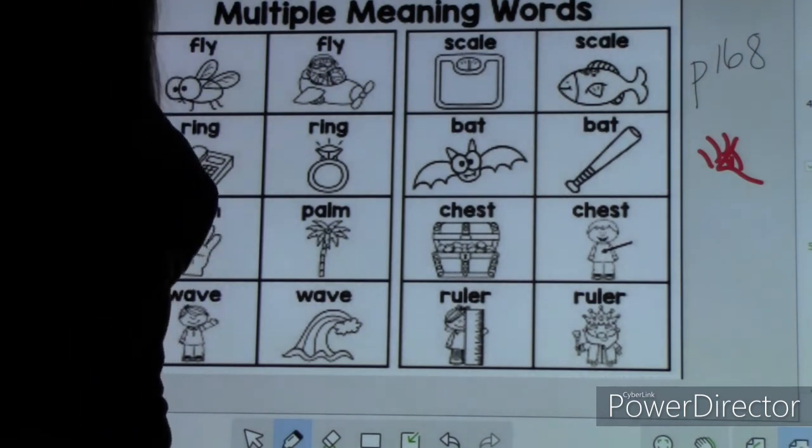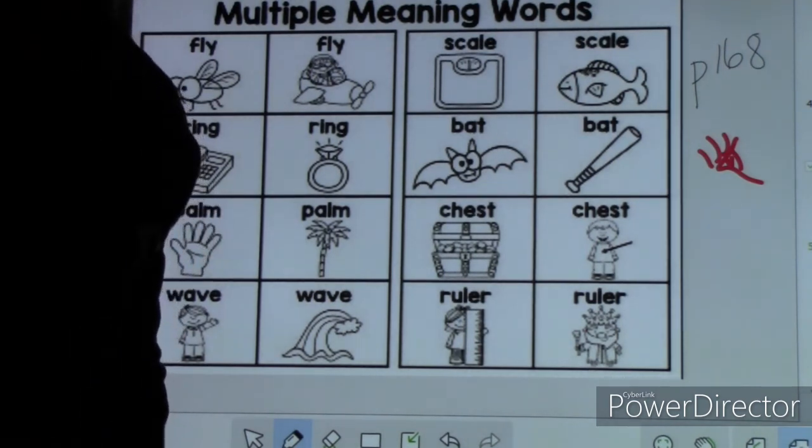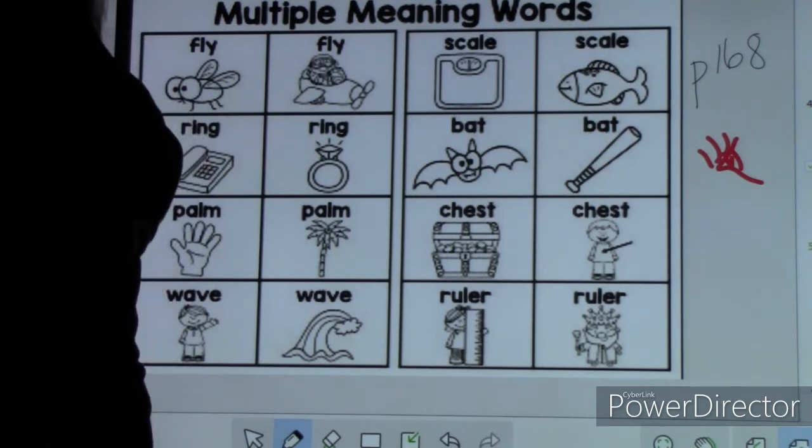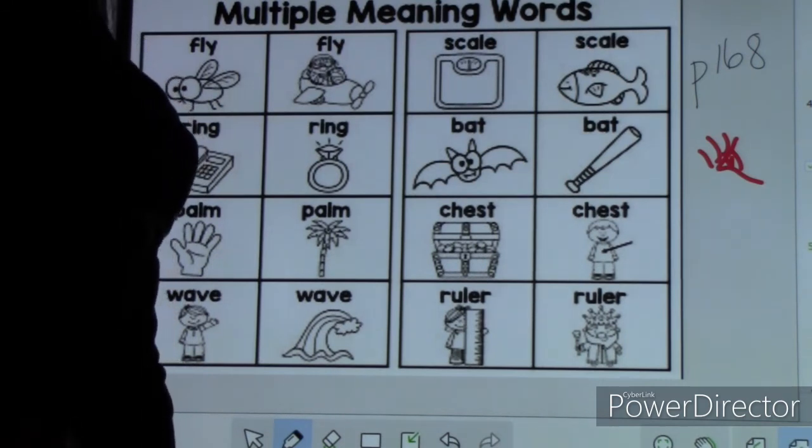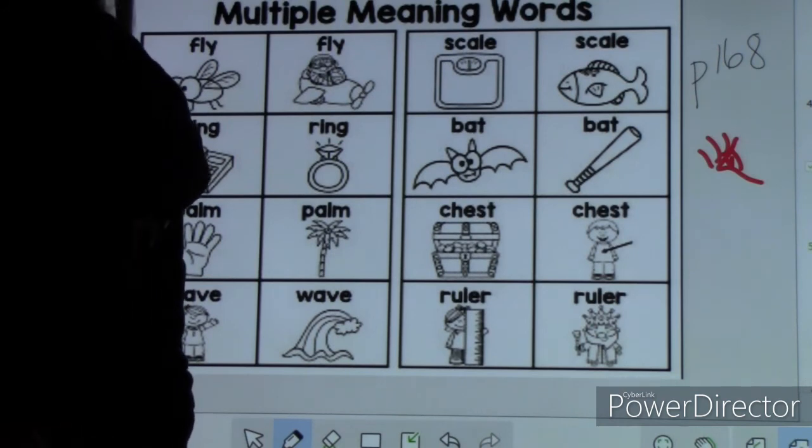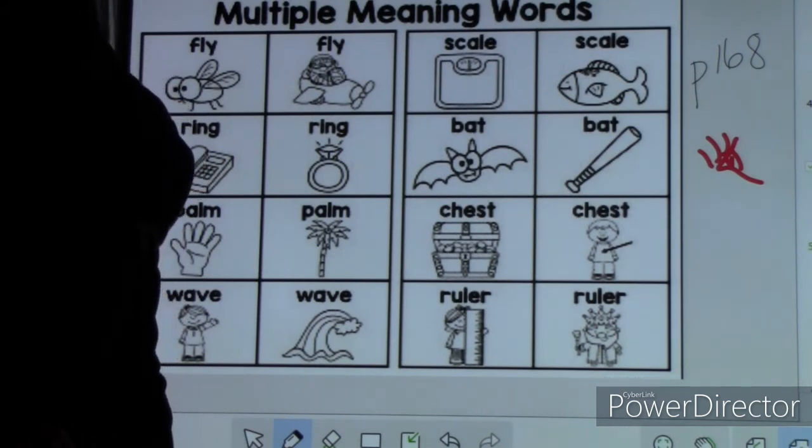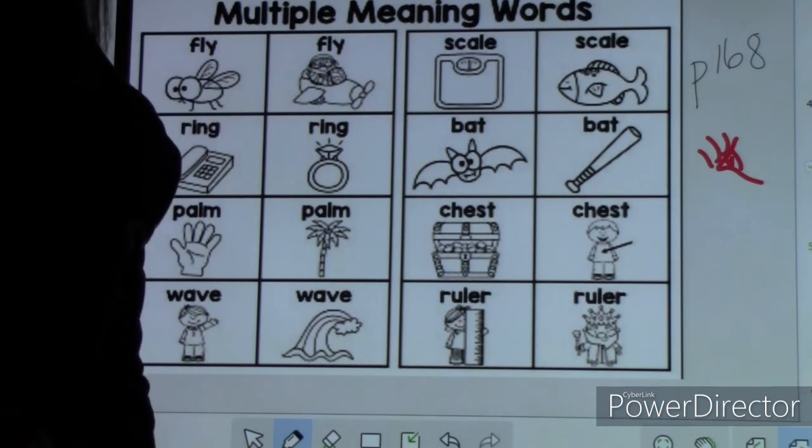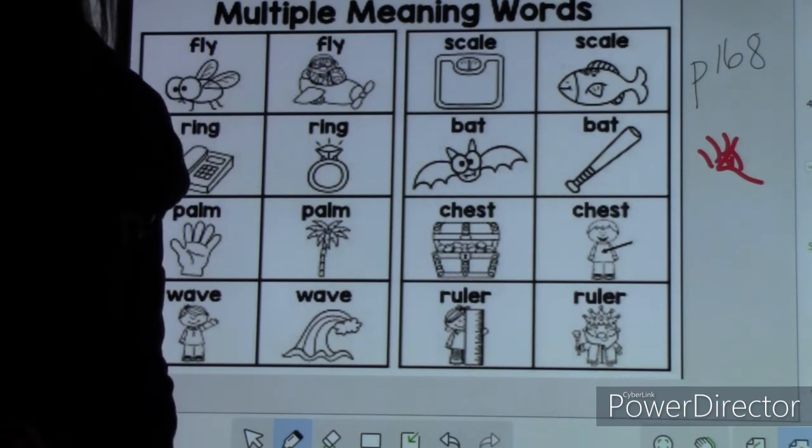You're going to take those words on page 168. They want you to read the sentence and tell which definition they're talking about. So number one says, Ed used a worm and bait on his fishing line. You have to decide if he's talking about a number of people or things in a row, or if he's talking about a string or wire.